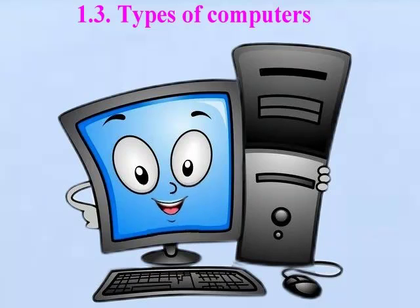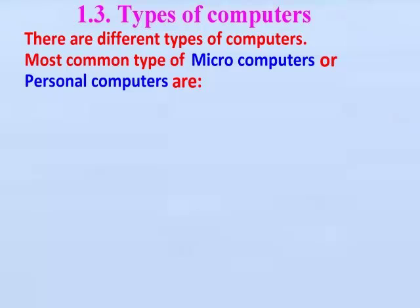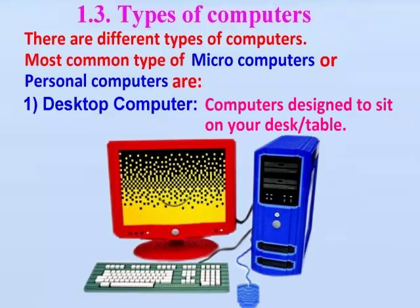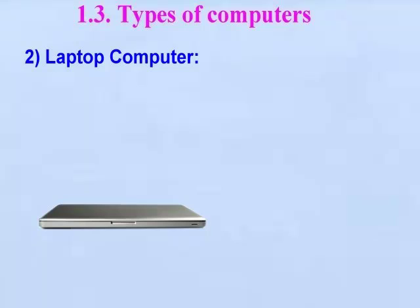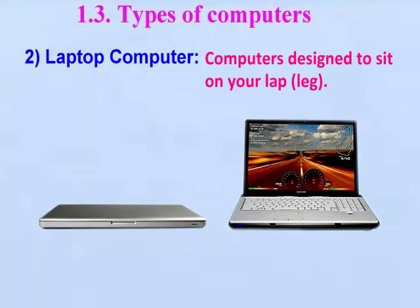Types of computers: There are different types of computers. The most common types of microcomputers or personal computers are: Desktop computers — computers designed to sit on your desk or table. Laptop computers — computers designed to sit on your lap or leg.